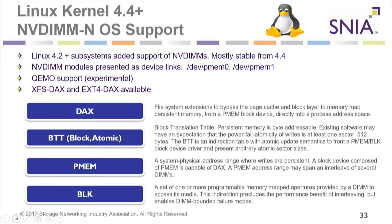Kernel support in Linux from 4.2 onward, mostly stable in 4.4 — do you love that caveat? Mostly stable. But NVDIMM modules, QEMU support, XFS direct, ext4 direct — the Linux people are doing their homework on this. All of these entities are now supported in Linux kernels for 4.4 and beyond. 4.2 was really early.